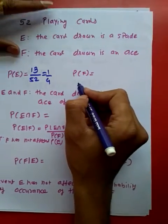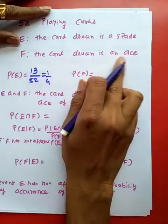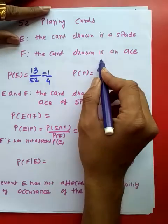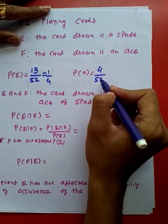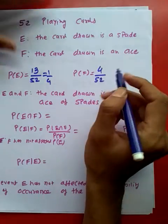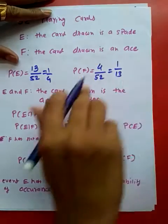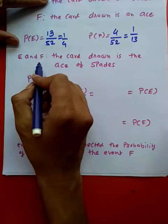If you consider the probability of F, the card drawn is an ace. How many aces are there? That is 4 out of 52. So that can be given as 4/52, which equals 1/13. Now, what is E and F? E and F is the intersection of E and F - that means both events are occurring simultaneously.